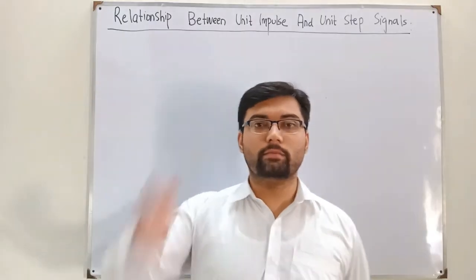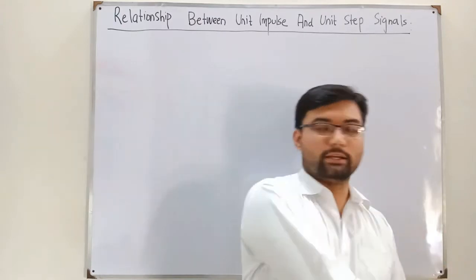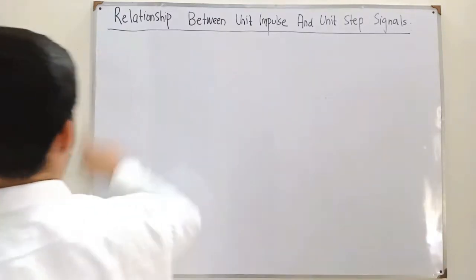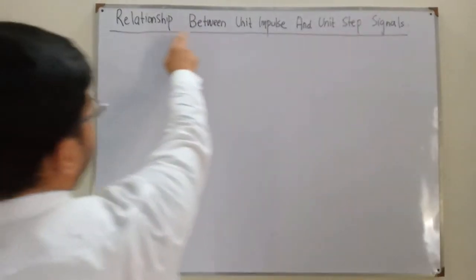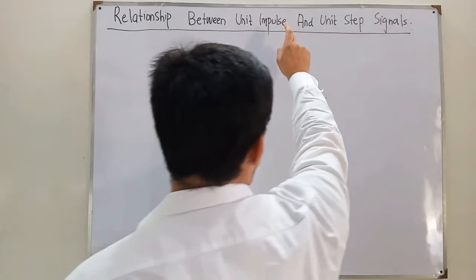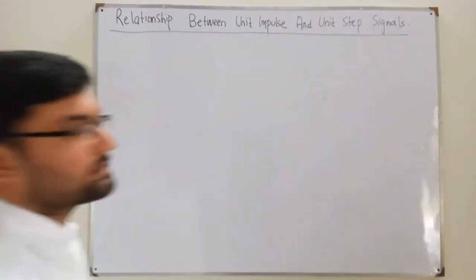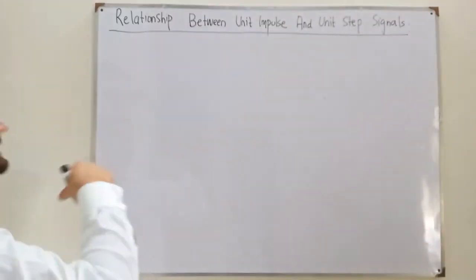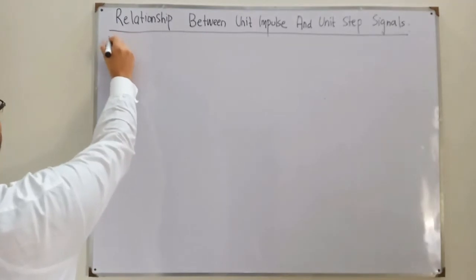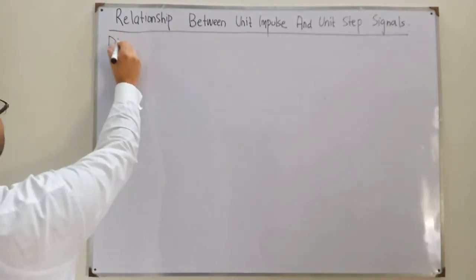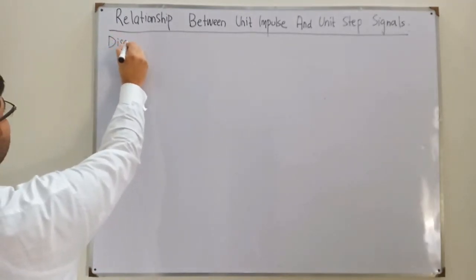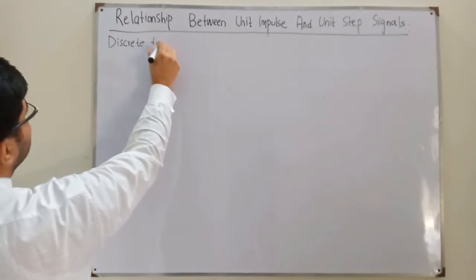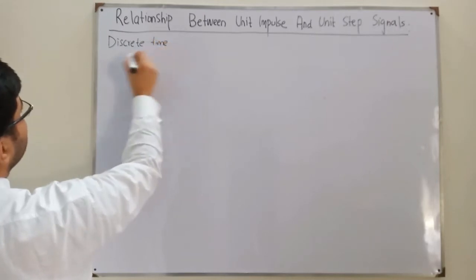Bismillah ar-Rahman ar-Rahim. Assalamu alaikum. Salam Khan here. The topic is the relationship between unit impulse and unit step signals. The first thing we see in this particular video is in the discrete time domain.